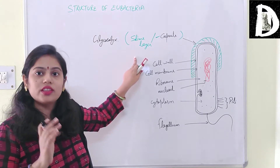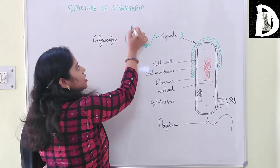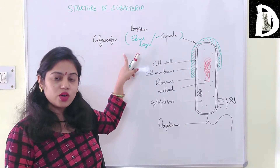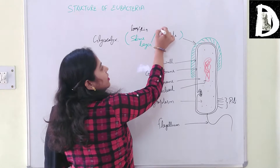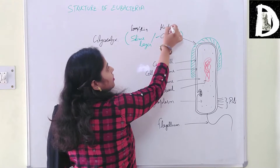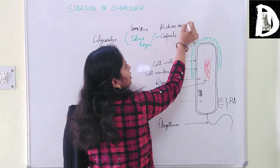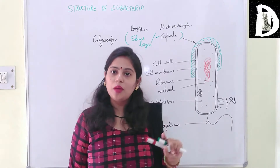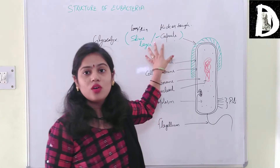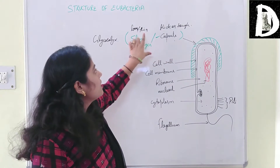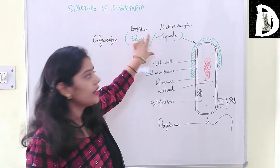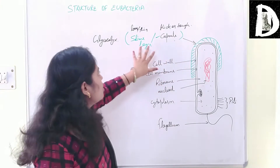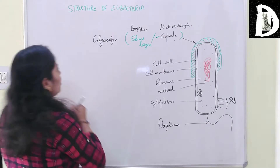If the glycocalyx layer is loose or thin, it will be a slime layer. If it is a thick and tough layer, it will be a capsule. Capsule and slime layer are both glycocalyx. The only difference is that the slime layer is made up of polysaccharide only, while the capsule is made up of both polysaccharide and polypeptide.